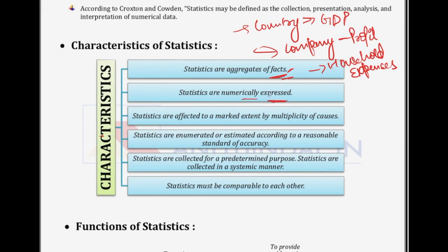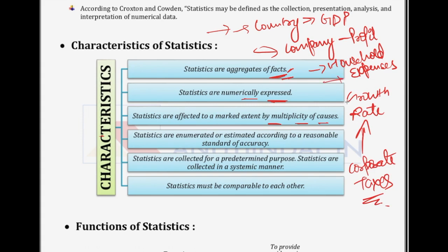They are numerically expressed — all of these are in numbers or quantitative form. Next, statistics are affected to a marked extent by multiplicity of causes. There are many factors that can affect statistics. For example, regarding a country's GDP: the country's laws, economic situation, government decisions and rules all affect GDP and growth rates, including corporate taxes. Similarly, household expenses and company profits are affected by many factors, such as how managers make decisions.